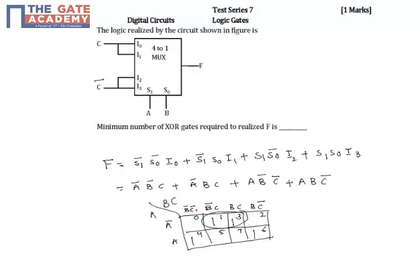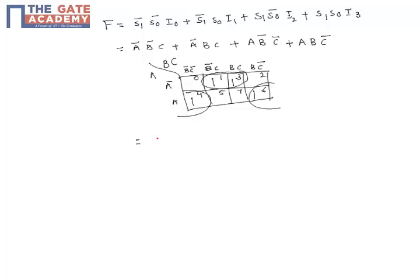So this is one and this is the second. So this is equal to... this is nothing but a bar c plus this is nothing but a into